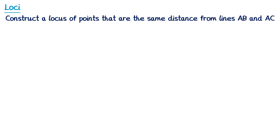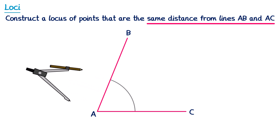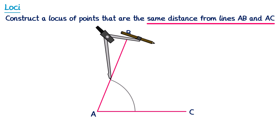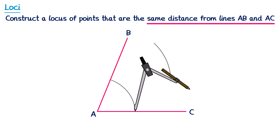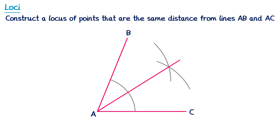For an exam question: construct the locus of points that are the same distance from lines AB and AC — we want the angle bisector. Take a pair of compasses, draw an arc, open them a bit wider, place on each intersection point and draw arcs of the same size, then connect the intersection point to the vertex of the angle. This gives the angle bisector, which is the locus. If asked for points closer to line AB than AC, shade the region above the bisector, since those points are closer to AB.